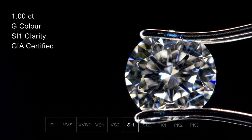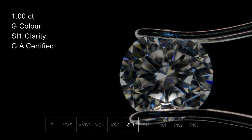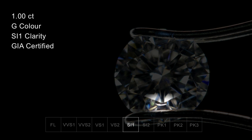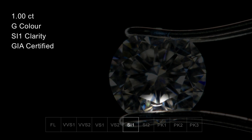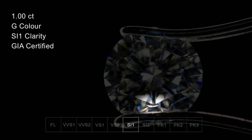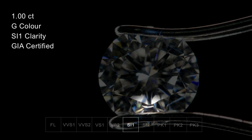Next after the VS level is SI1 and SI2. SI stands for small inclusions. Here is a classic SI1 clarity. This particular diamond contains a feather, which is a type of inclusion and is the main reason that this stone has been classified as an SI1. This is in fact quite a typical SI1 clarity. The inclusion is positioned just off what's known as the table of the diamond, which makes it less visible to the eye.